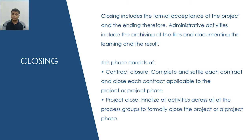The final step in the traditional approach is closing. Closing includes the formal acceptance of the project and the ending thereof. Administrative activities include the archiving of files and documenting the lessons learned and results. This phase consists of two things: contract closure and project close. Contract closure includes the complete and settlement of each contract applicable to the project or project phase. Project close includes the finalization of activities across all process groups to formally close the project or project phase.